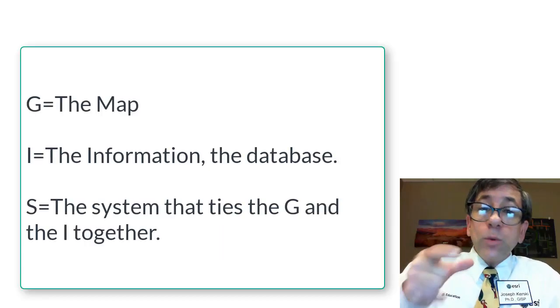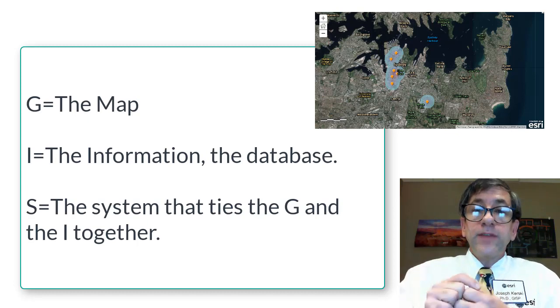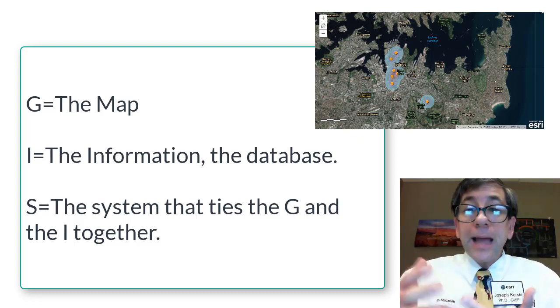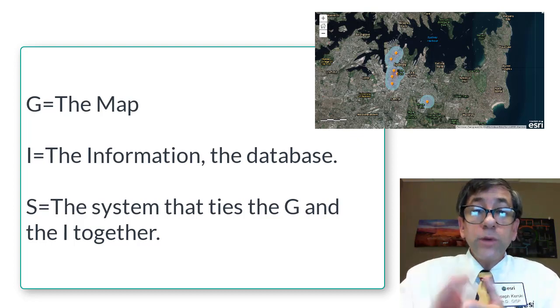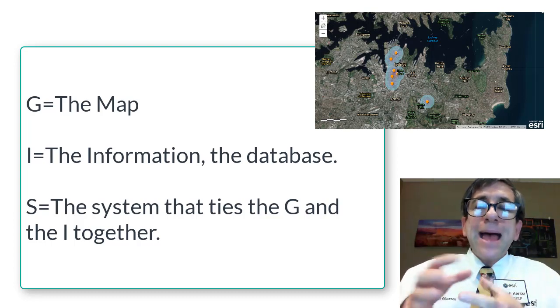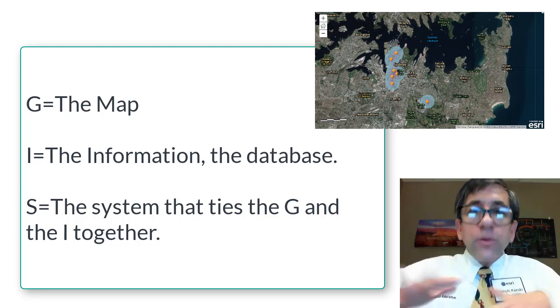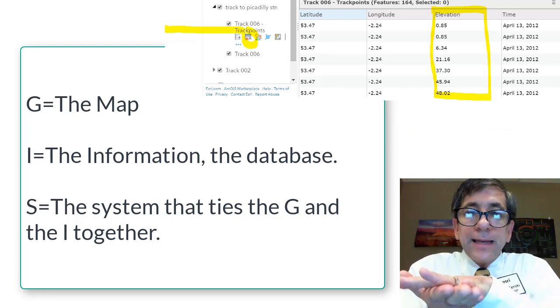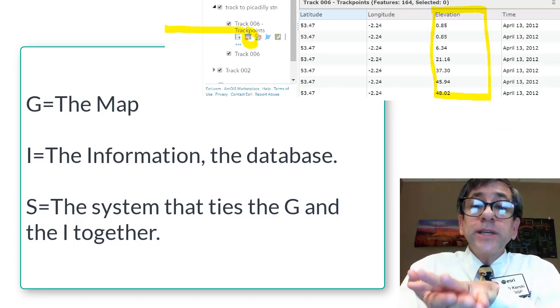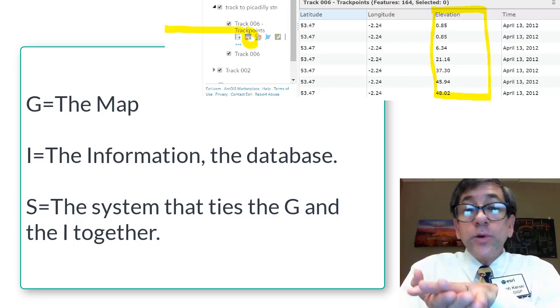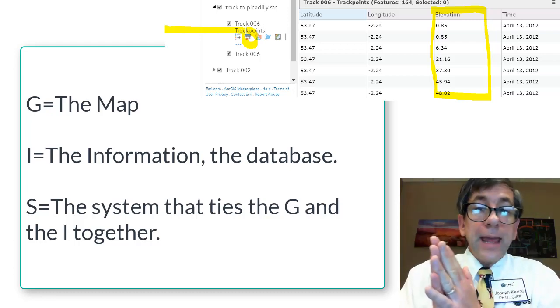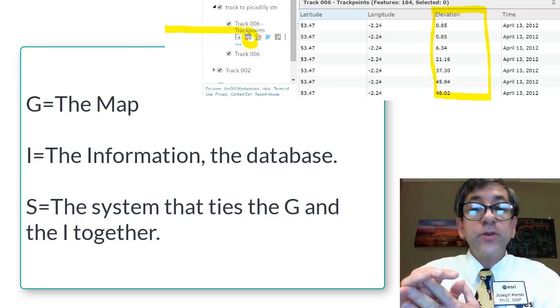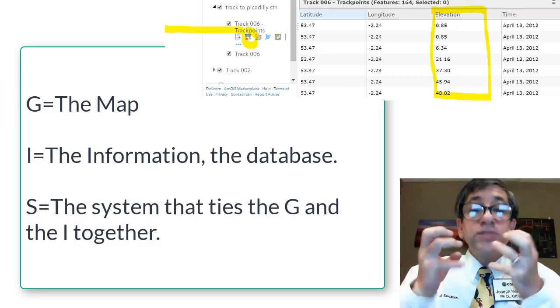Another way to conceptualize GIS is to break apart its three words. G, or the geographic component, refers to the location component. Everything in a GIS is referenced to a real-world coordinate. These coordinates can be a single point, line, a polygon, or define the starting point and extent of a grid or image. So the G part is like the map, a satellite image, or a 3D representation of the earth. The I, or the information part, refers to the informational database behind the spatial data, a geodatabase if you will, usually stored as a table or a set of related tables.